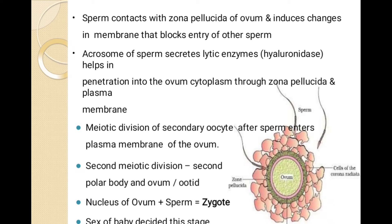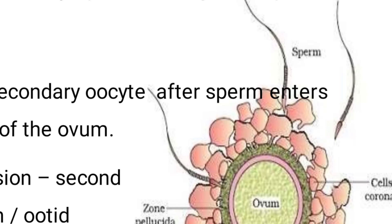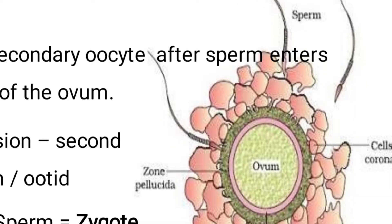In the sperm's head, there is the acrosome, and inside the acrosome there is a hydrolytic enzyme called hyaluronidase. When the acrosome releases hyaluronidase, it functions to penetrate and dissolve the zona pellucida and plasma membrane of the ovum.